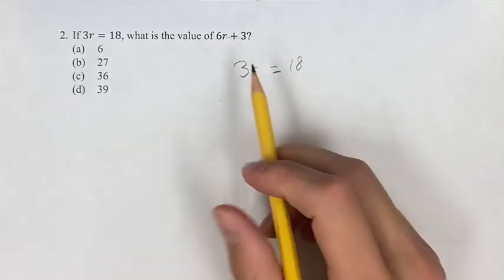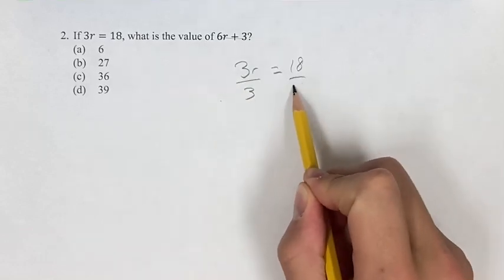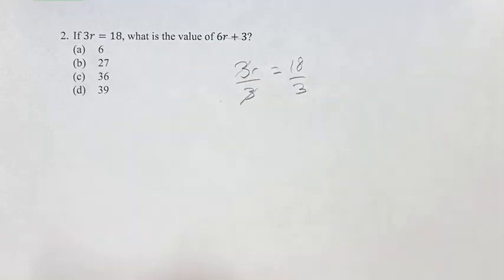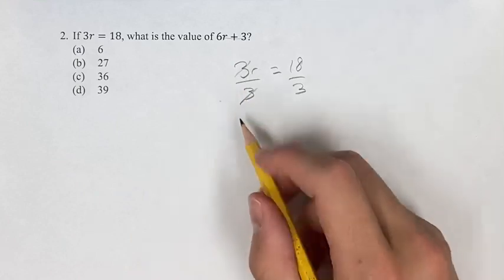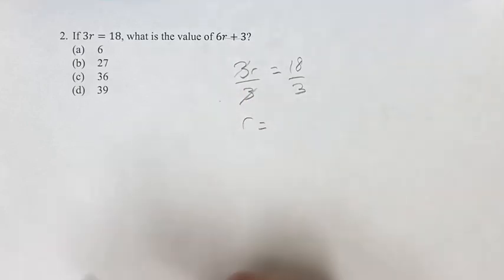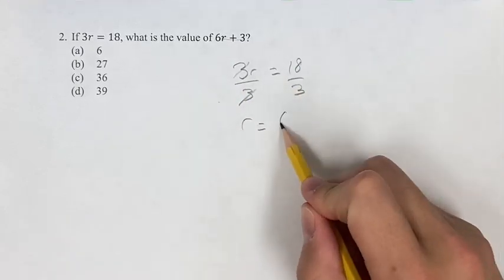So to solve for r here we want to get it alone, so if we divide both sides by 3, we get 3 divided by 3 is 1, so we have 1r on this side which we can just write as r is equal to 18 divided by 3 is 6.